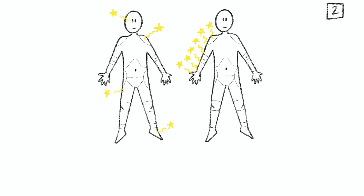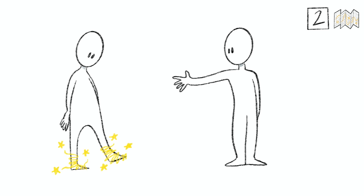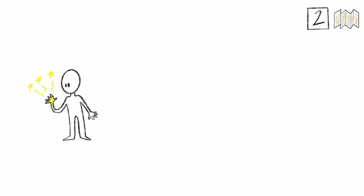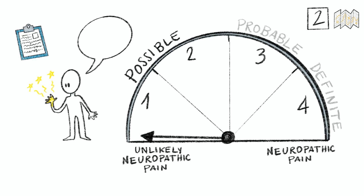The second criterion examines whether the pain distribution is neuroanatomically plausible. This means a stocking distribution for length-dependent neuropathies such as painful diabetic neuropathy. For painful radiculopathies, the pain distribution should be roughly dermatomal. Both criteria 1 and 2 depend on a careful clinical history and interview — listen to your patient.